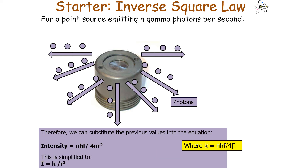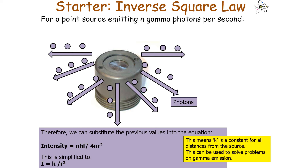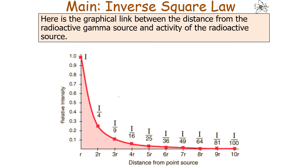We've defined intensity as power — energy per second — divided by area. Substituting the values we've derived: intensity equals NHF divided by 4πr². This simplifies to I = K/r², where K equals NHF/4π. This works because N, H, F, 4, and π are all constant values for the same radioactive source, making K a constant for all distances from the source, which can be used to solve problems on gamma emission.